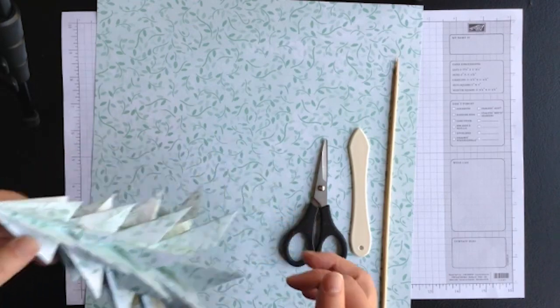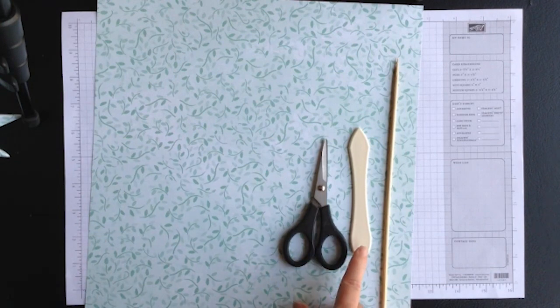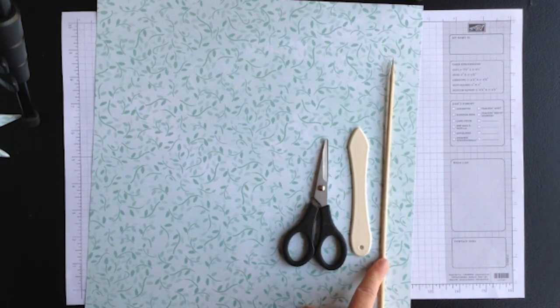The materials that you need for this project are 12 by 12 scrapbook paper, scissors, bone folder, and some sort of slim item such as a skewer or an unsharpened pencil.